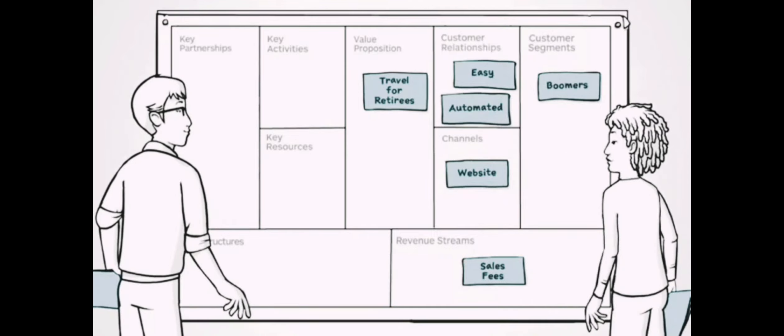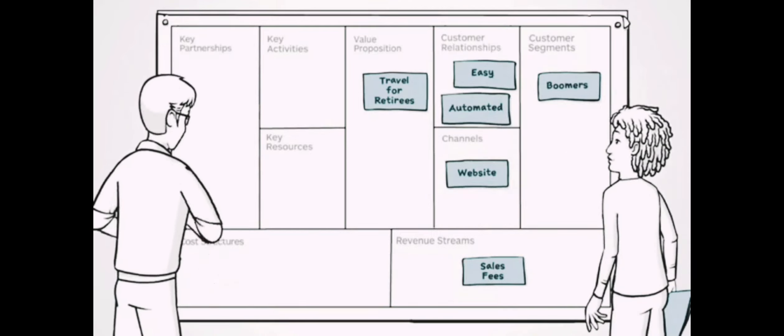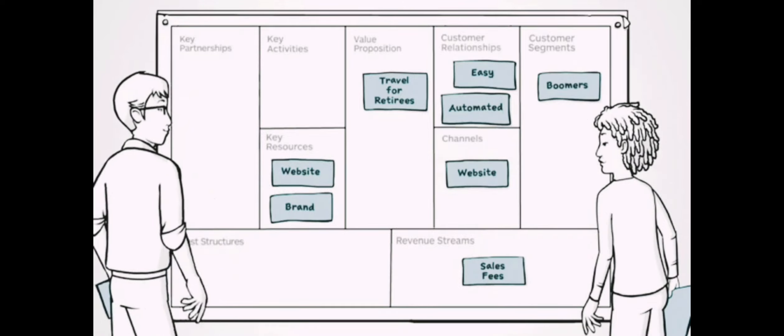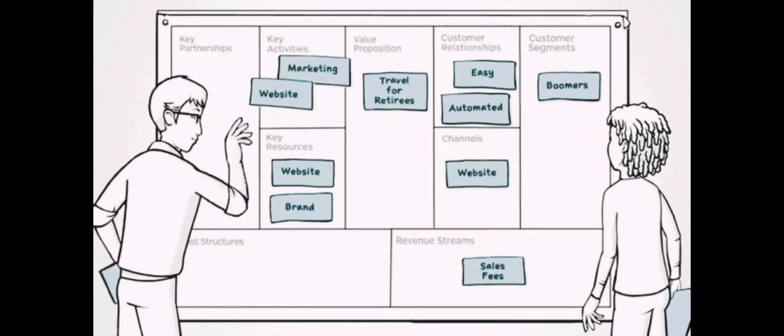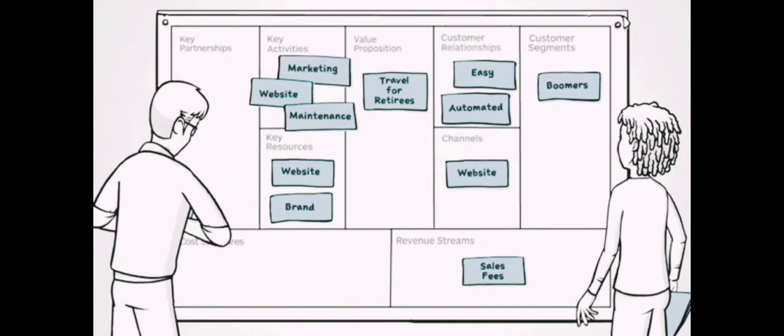Next you figure out what key resources you need to offer all that. Like a reliable website and brand recognition. Carl's thinking his key activities will be marketing, website and maintenance. And then partners will do the booking.